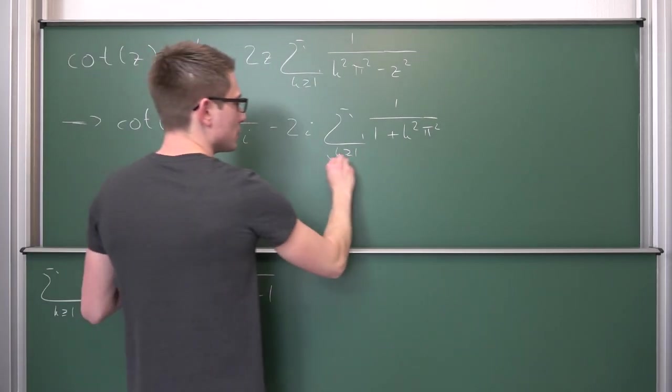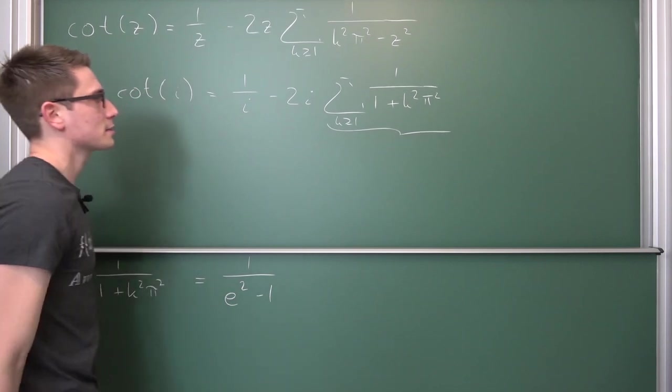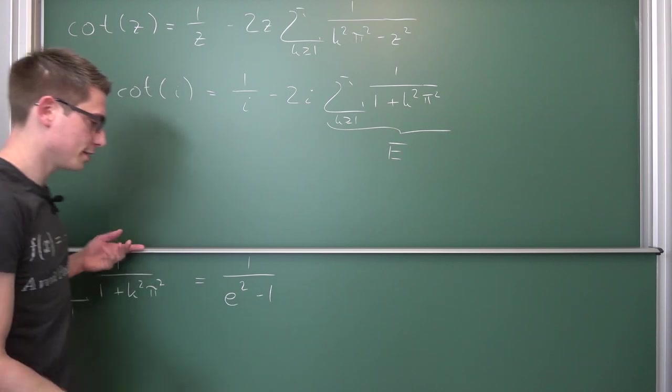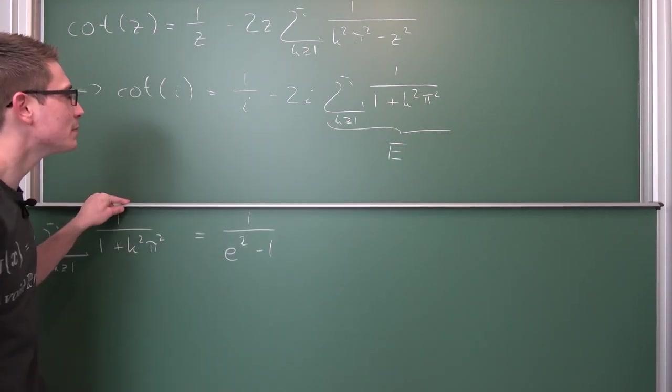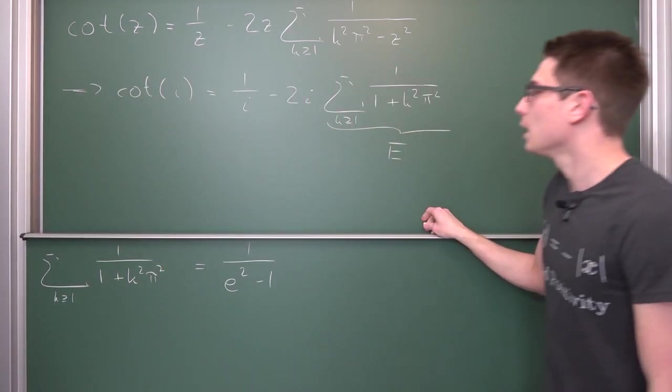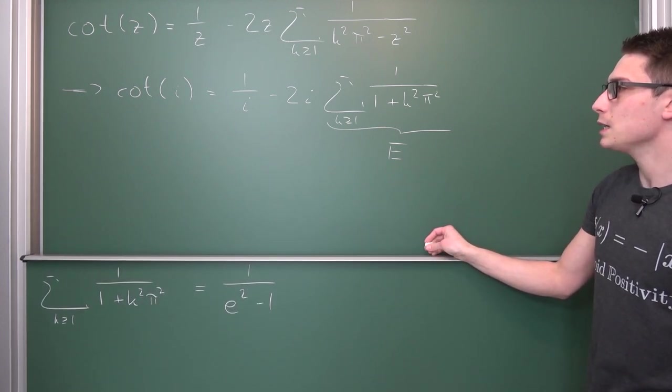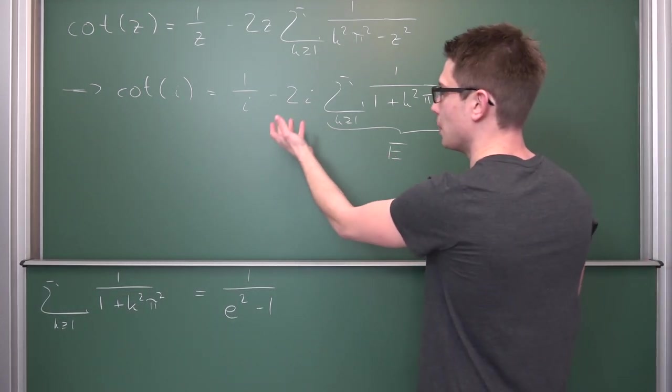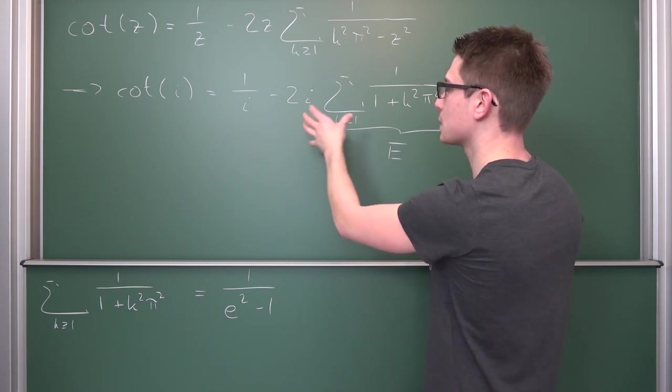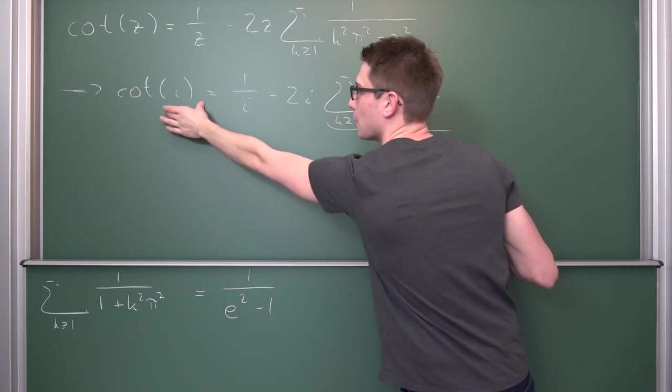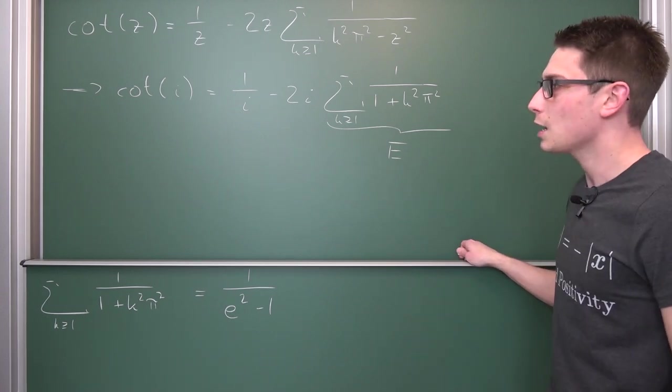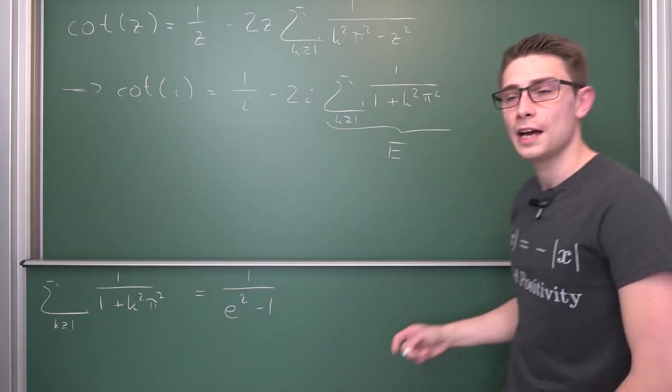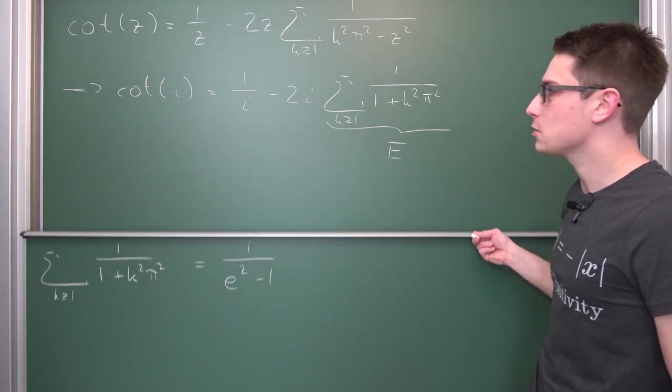This thing right here is our series. Let us give it a nice name capital S. So basically this thing is some kind of imaginary part, is part of the imaginary part of the cotangent of i. And we are going to just take a look at what the cotangent of i actually is. It's quite easy to evaluate.